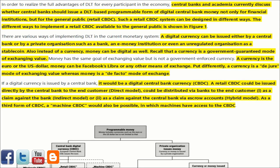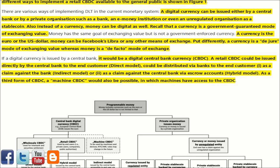In order to realize the full advantages of DLT for every participant in the economy, central banks and academia currently discuss whether central banks should issue a DLT-based programmable form of digital central bank money not only for financial institutions, but for the general public — a retail CBDC. Such a retail CBDC system can be designed in different ways. A digital currency can be issued either by a central bank or by a private organization such as a bank, any money institution, or even an unregulated organization as a stablecoin. Also, instead of a currency, money can be digital as well.